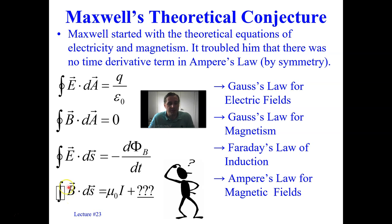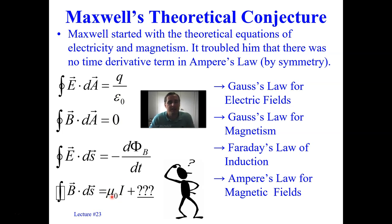Notice this closed loop line integral has the permittivity of free space epsilon-naught in the denominator and the permeability of free space mu-naught in the numerator. There's a nice symmetry there — the terms are working out nicely in this theory of electromagnetism. Notice there is no source term in the magnetism Gauss's law equation.